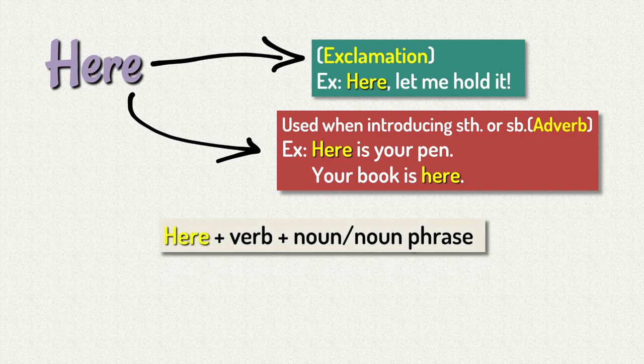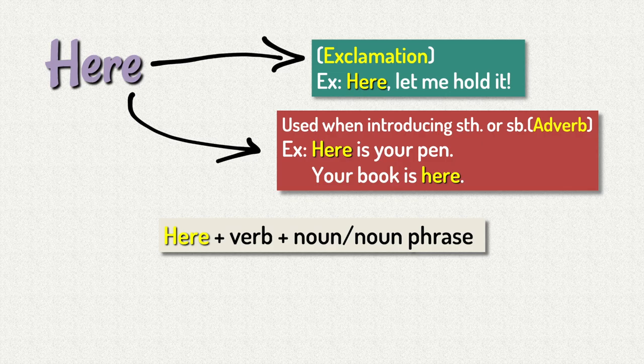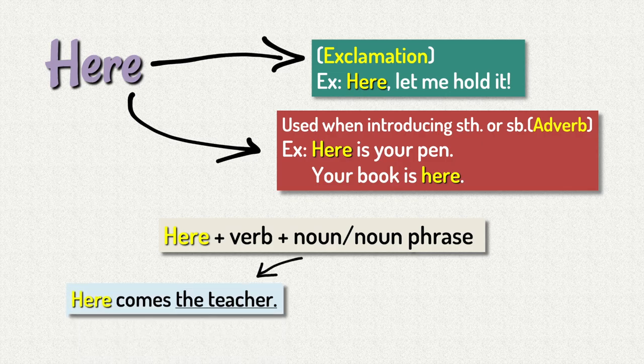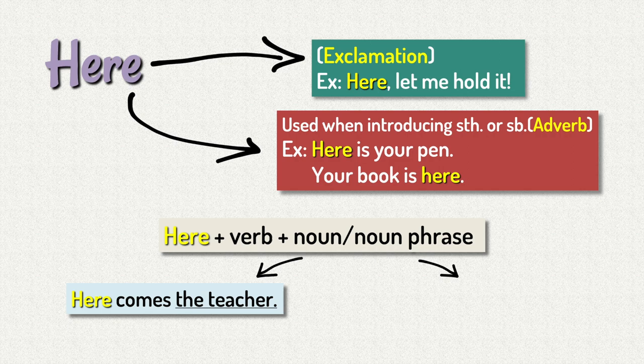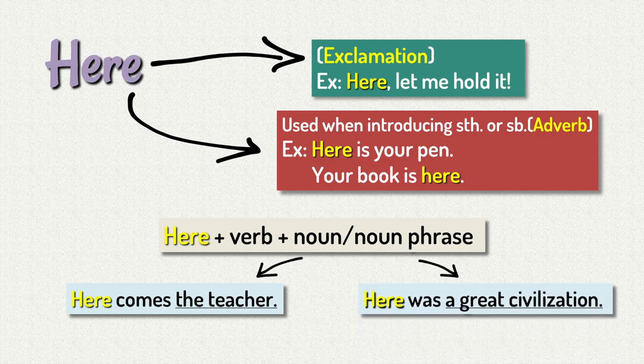We use here plus the verb plus a noun or a noun phrase. For example, here comes the teacher. So the teacher would be your subject. Instead, with a noun phrase, here was a great civilization.